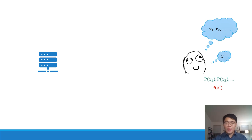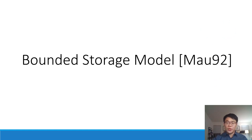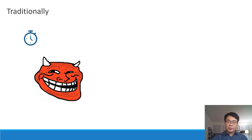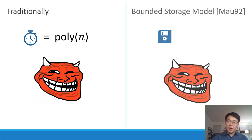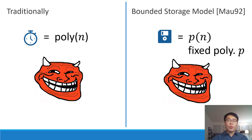So now you're probably asking how we achieve these disappearing ciphertexts, disappearing signatures, and disappearing programs. Indeed, this is not possible in the standard model because you can simply write down what is being sent. That's why we rely on the bounded storage model, first put forward by Unimora in 1992. Traditionally, an adversary in cryptography is bounded by time — performing an attack within polynomial time in the security parameter n. However, in the bounded storage model, the adversary can take as long as it wants, but is bounded by the amount of storage it uses — at most p(n) for some fixed polynomial p.